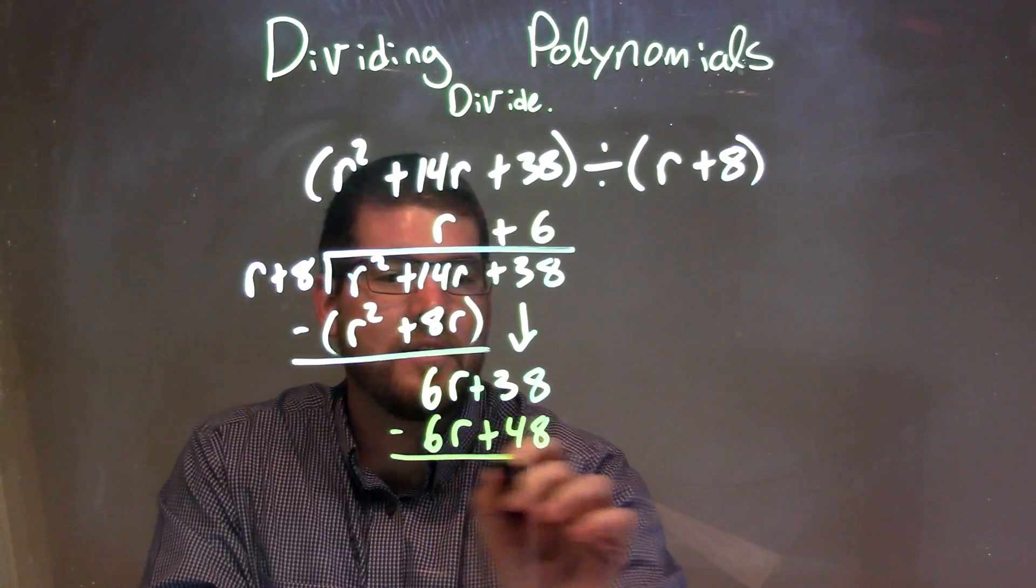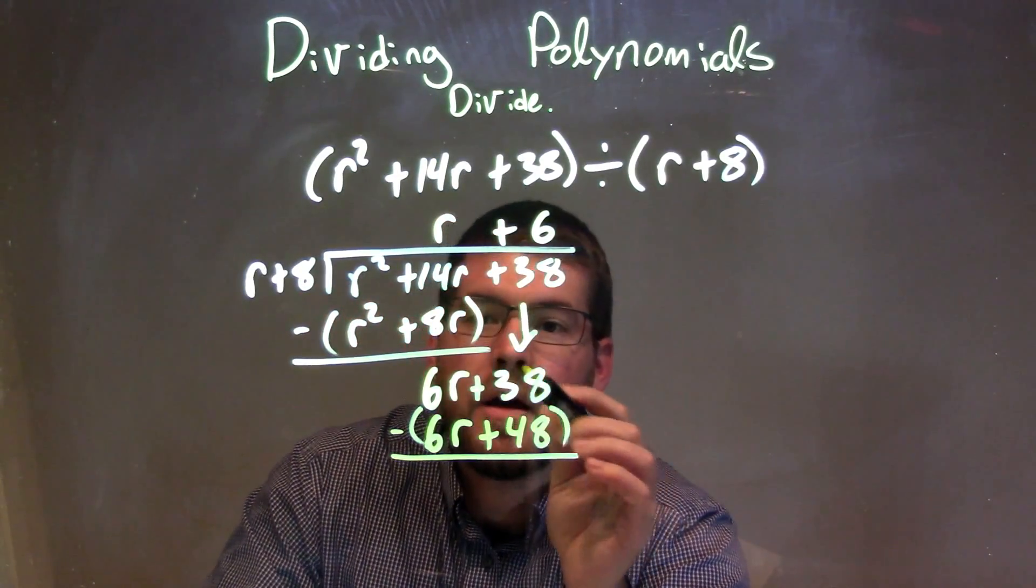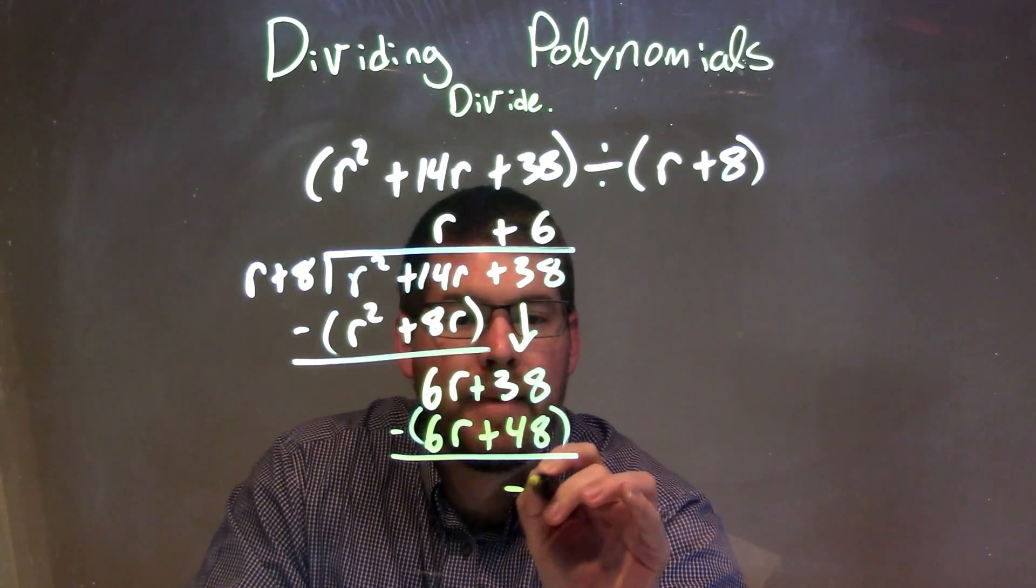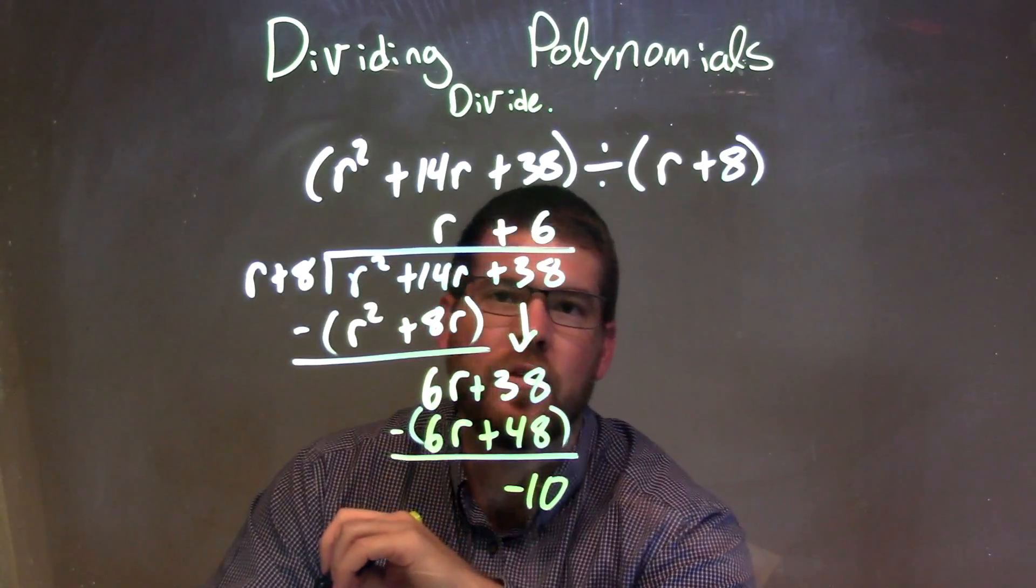So now we need to subtract the two. Subtract them. So 6r minus 6r is just 0, and 38 minus 48 is a minus 10. Minus 10 is our remainder.